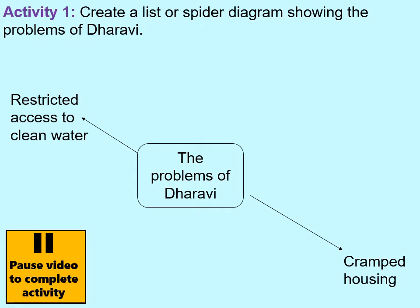The first problem is restricted access to clean water. In Dharavi, the standpipes or taps that people get water from are only available for about two hours in the morning, meaning people don't have access to clean water all day. The housing is also really cramped because of the high population density, which helps diseases spread quite easily. Some houses might have up to 20 people living in them at once, often in just one or two rooms.